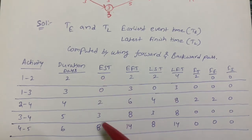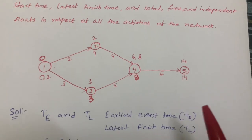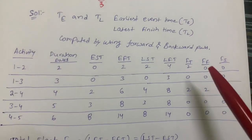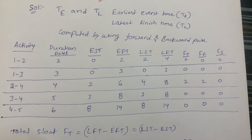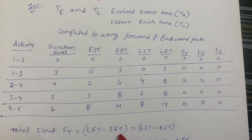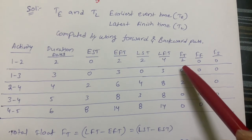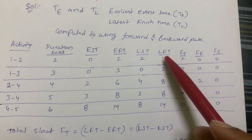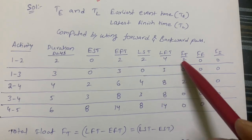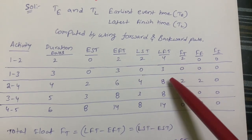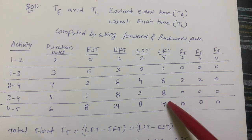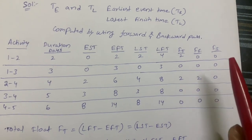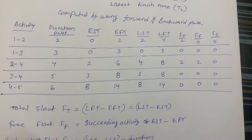Next we calculate total float (TF) = LFT − EFT (or LST − EST). So: 4 − 2 = 2, 3 − 3 = 0, 8 − 6 = 2, 8 − 8 = 0, and 14 − 14 = 0.